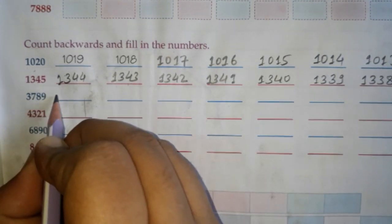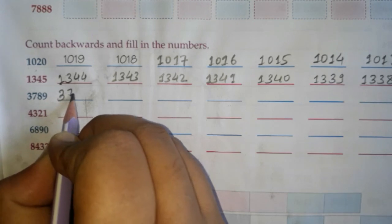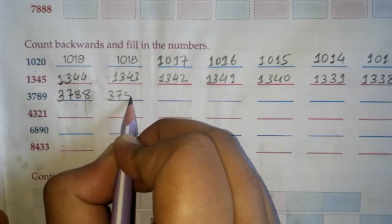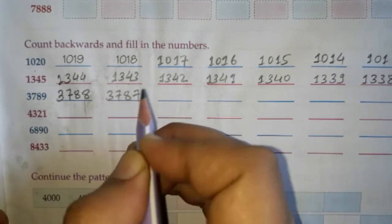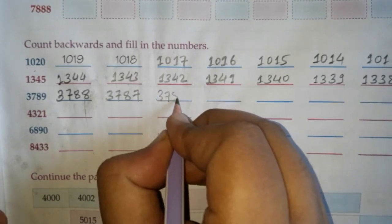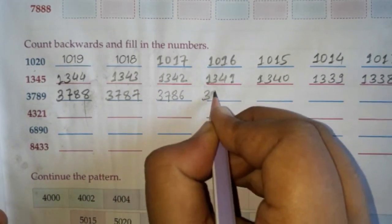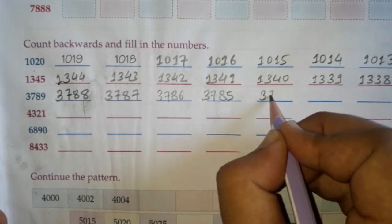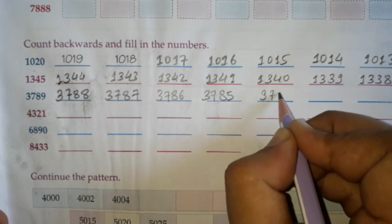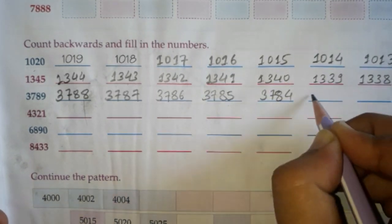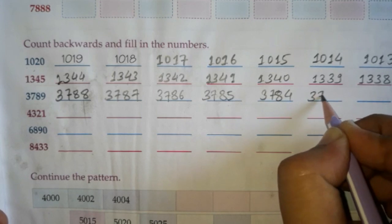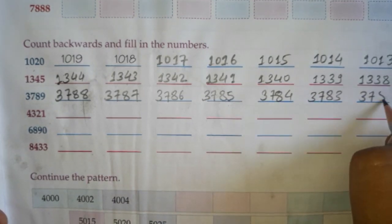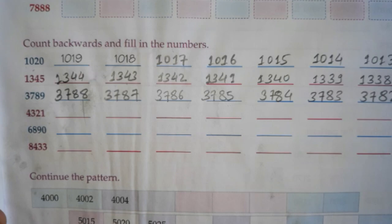We will count backward from 3789: 3788, 3787, 3786, 3785, 3784, 3783, 3782. Like this all the questions can be solved.